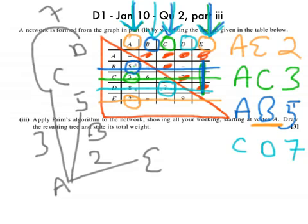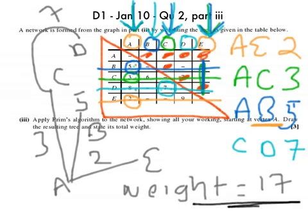And then I have to write down the weight, so I add them all up. So it's 7 and 3 is 10, and I got 5 and 2 which gives me a weight of 17. And just to literally finish off, I'll underline my answer and job done.